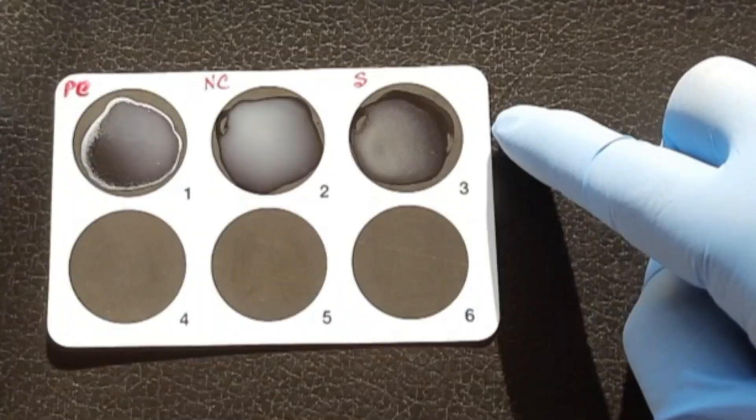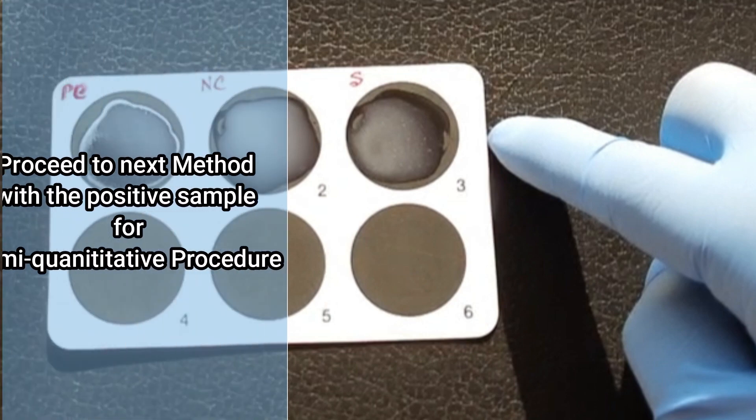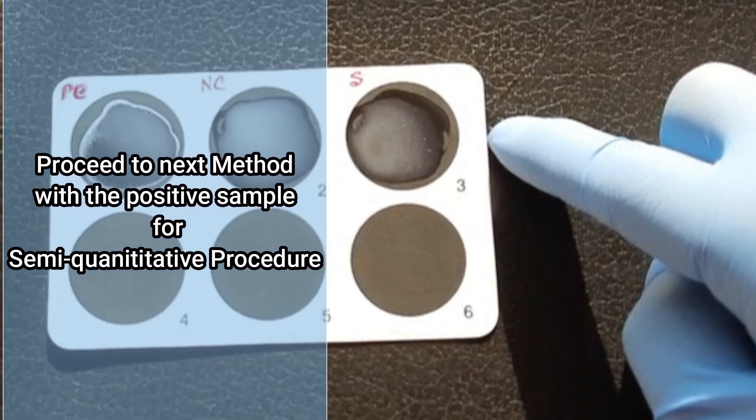If the serum contains detectable level of CRP, it will be interpreted as positive. Then the next thing to do is you have to proceed for semi-quantitative procedure to measure the CRP level, which we will show in the upcoming video.